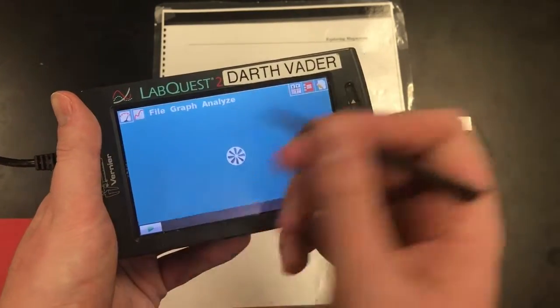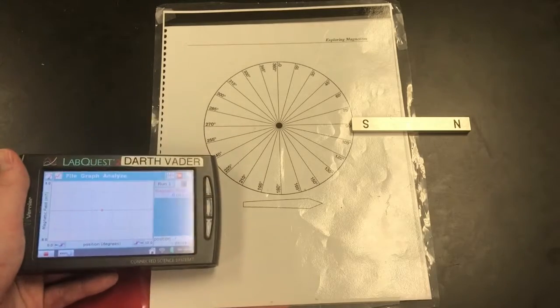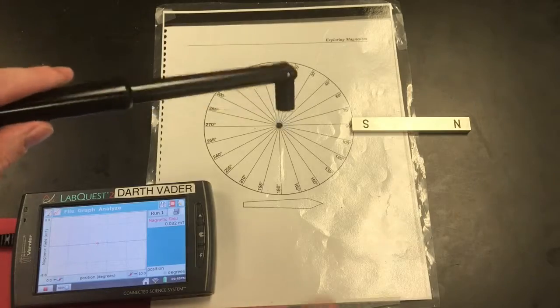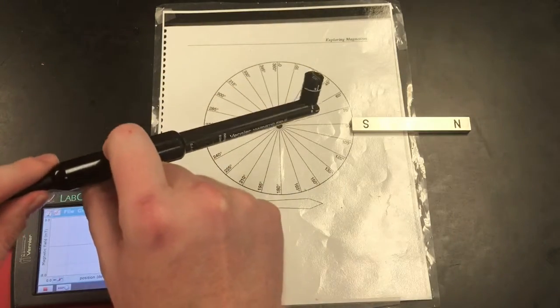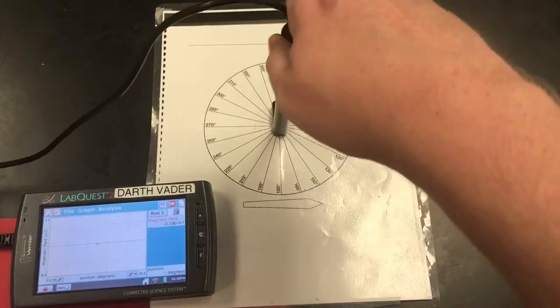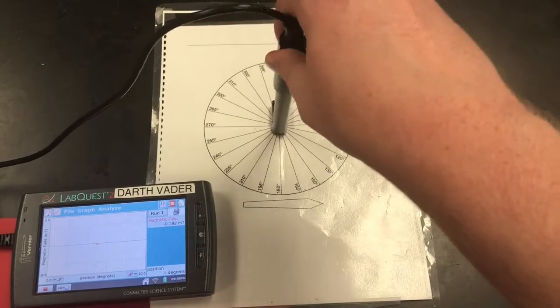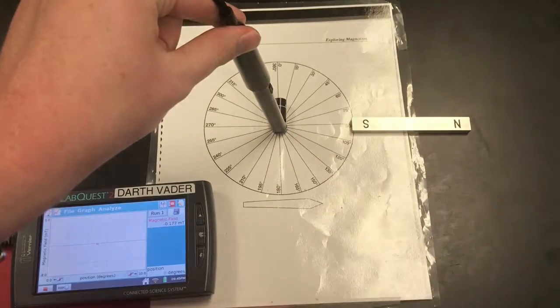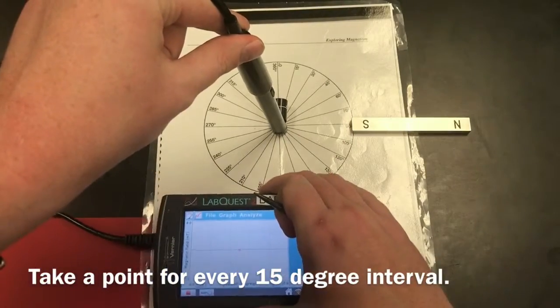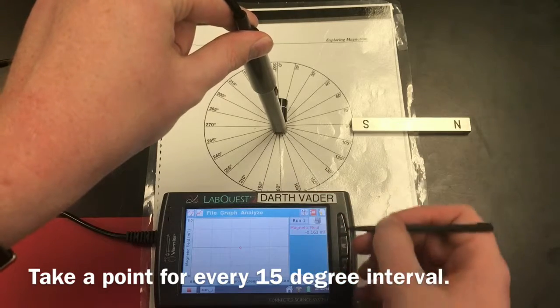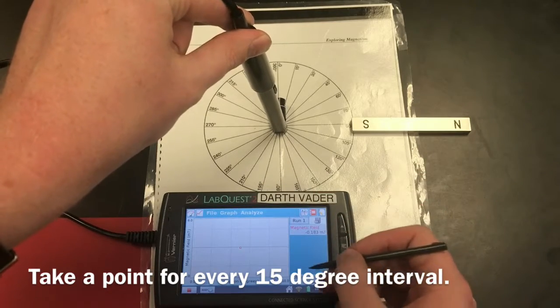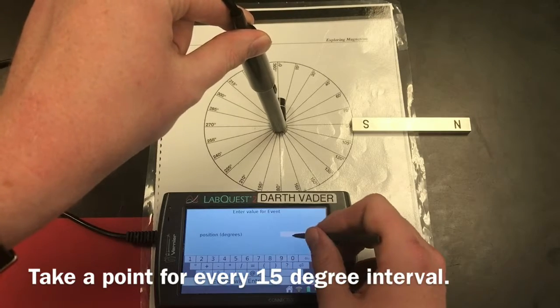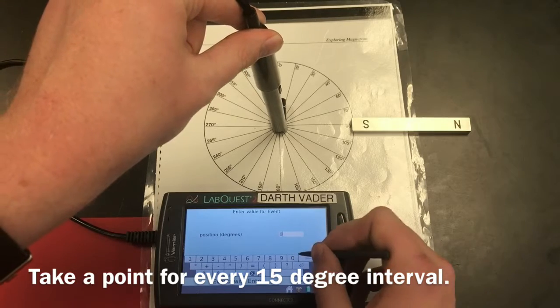I'm going to hit play right away because it's events with entry, so we're just getting live readings here. What you're going to want to do for this trial is take your magnetic probe, put it in the middle here, and for the first degree you're going to want to line it up with zero. So line it up with zero, and once it's stabilized just a little bit here, I'm going to hit keep.